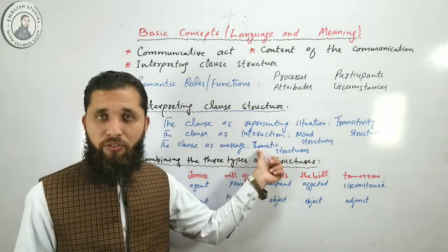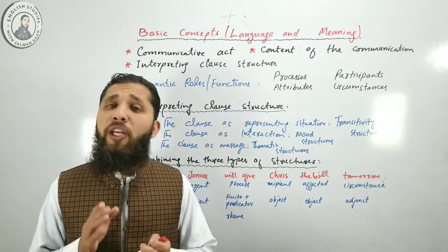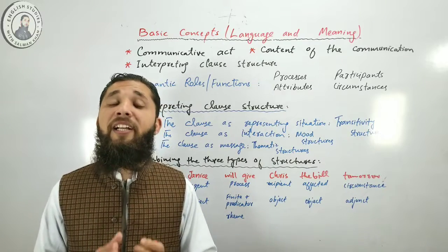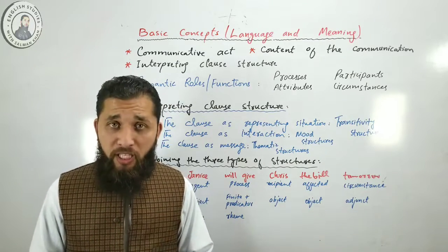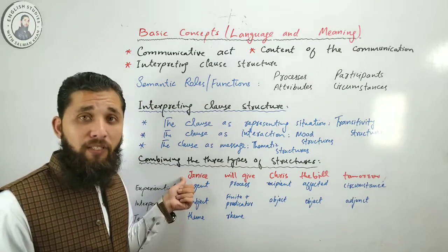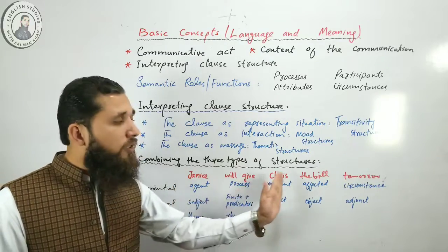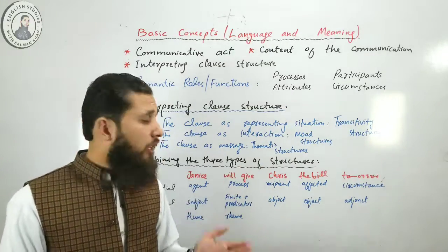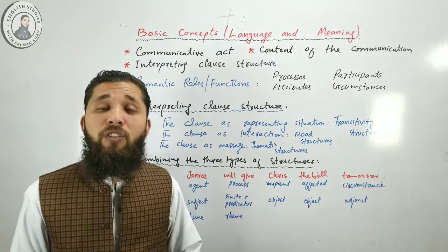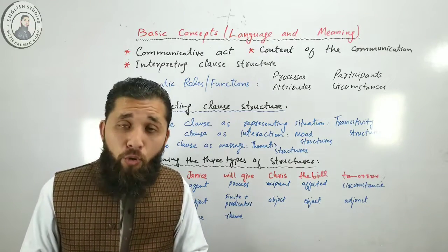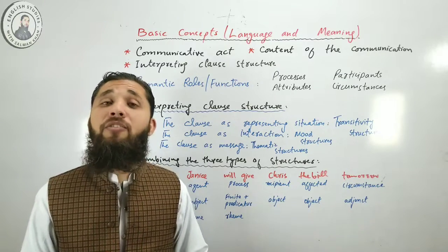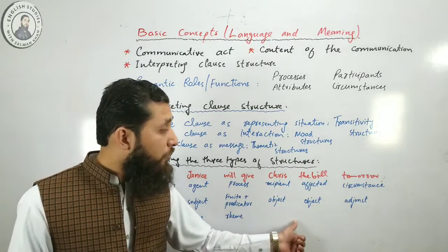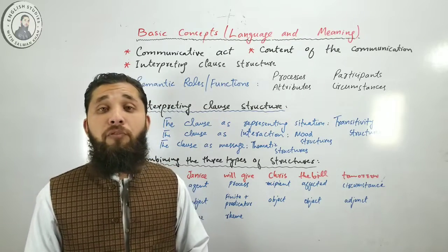The third is the clause as message, called thematic structure. Here the speaker organizes the informational content of the clause to establish whatever point of departure is desired for the message. This is called the theme, which in English coincides with the first element or elements of the clause. The rest of the clause is called the rheme. Combining the three types of structures: they are mapped simultaneously onto one example to show the triplet nature of the analysis of English clauses from a functional point of view. The predicator, object, and adjunct are syntactic elements of function corresponding to the semantic roles of process, recipient, affected, and circumstance.